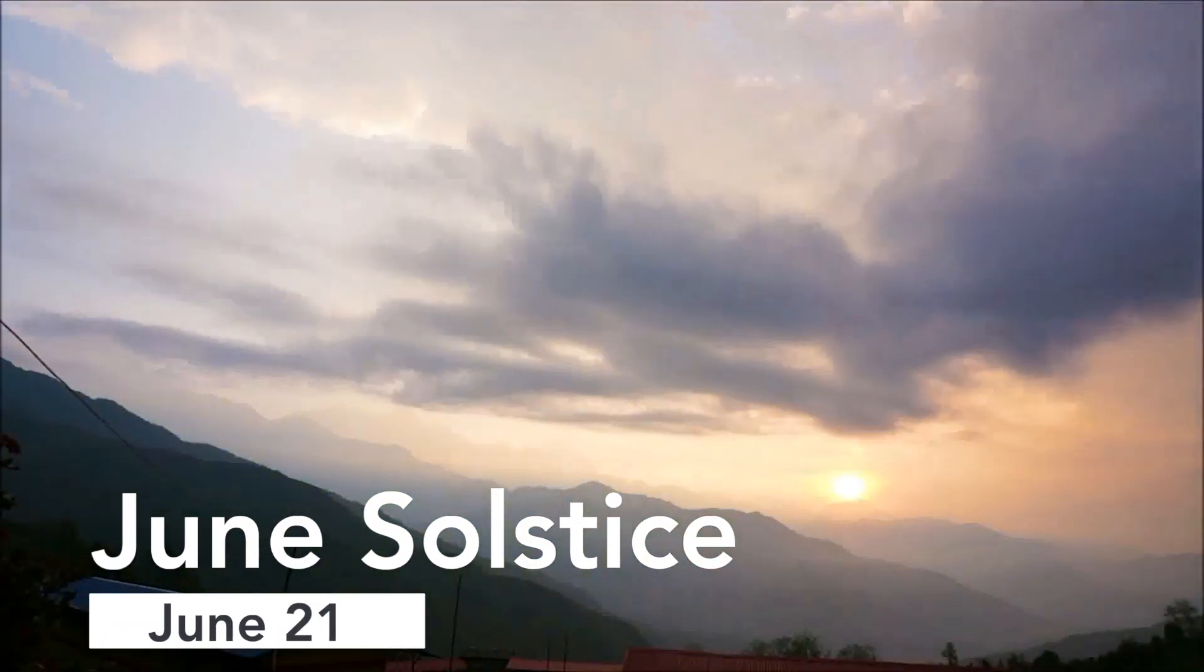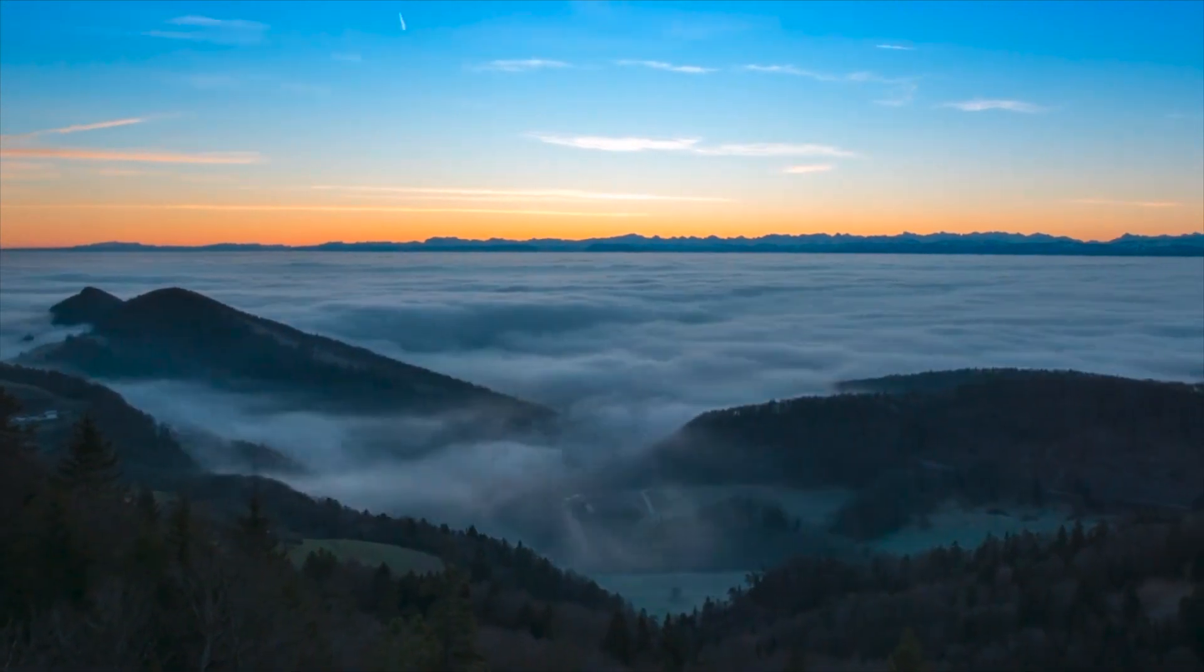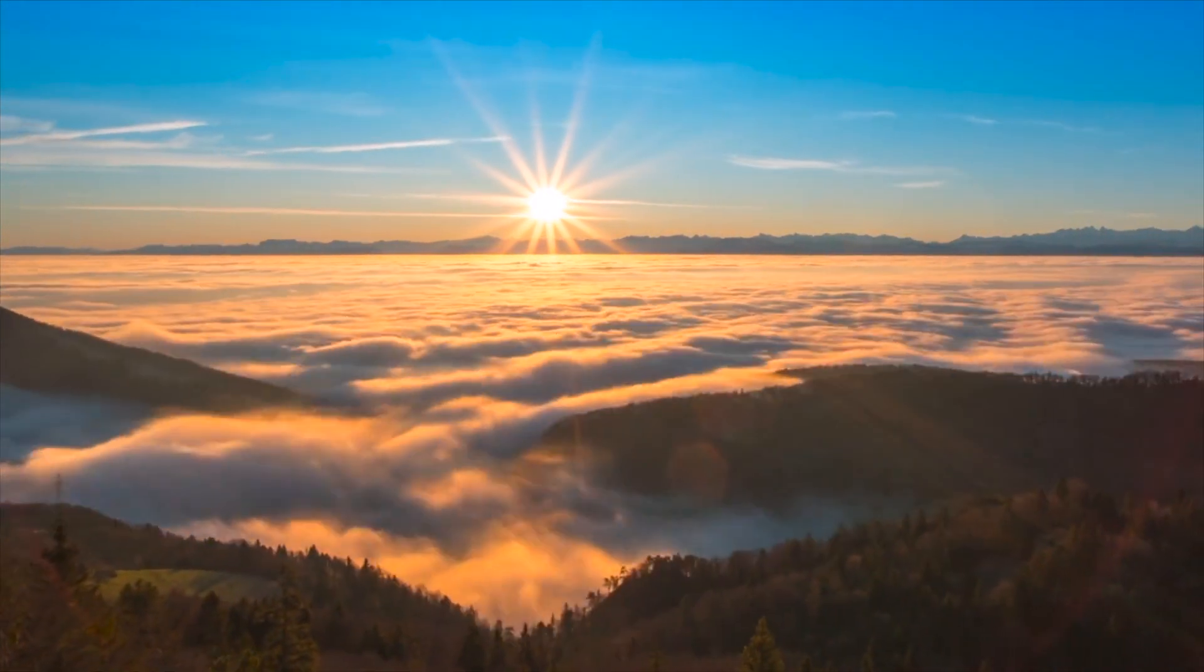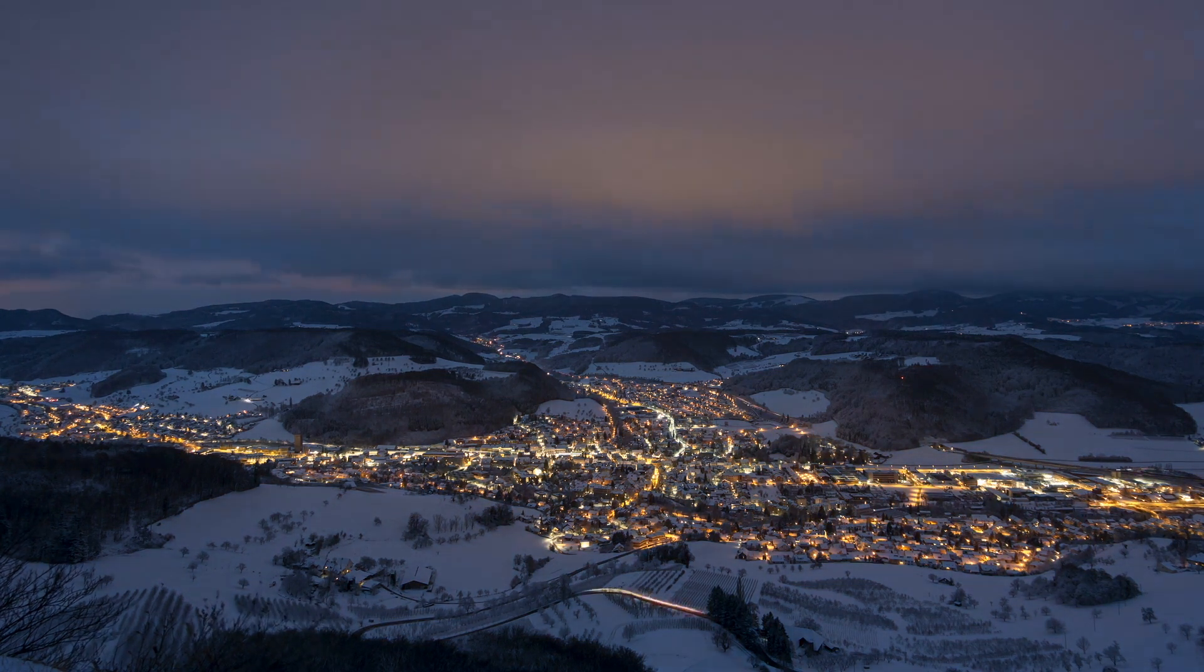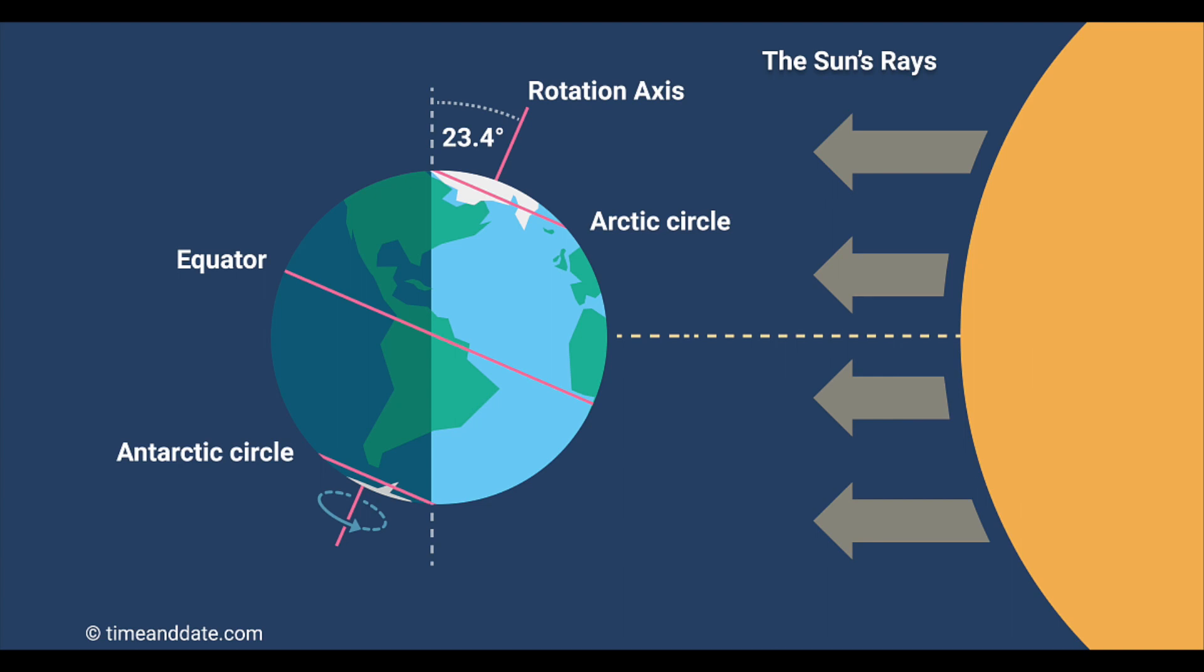June Solstice. 21 June will be the longest day of 2021 in the Northern Hemisphere, while the longest night in the Southern Hemisphere. The Earth has a tilt of about 23.5 degrees on its axis, which gives rise to its seasons. The orbit of the Earth on this day tilts maximum towards the sun. This phenomenon happens twice a year.